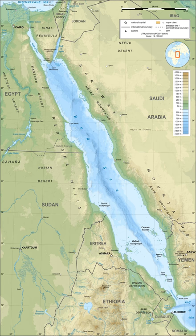The name of the sea may signify the seasonal blooms of the red-colored Trichodesmium erythraeum near the water's surface. A theory favored by some modern scholars is that the name 'red' refers to the direction south, just as the Black Sea's name may refer to north. The basis of this theory is that some Asiatic languages used color words to refer to the cardinal directions.